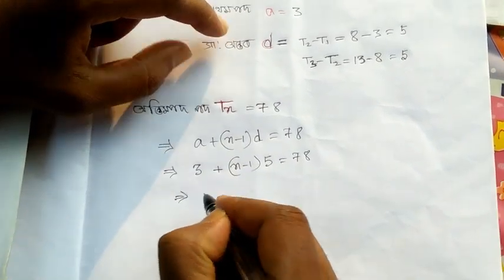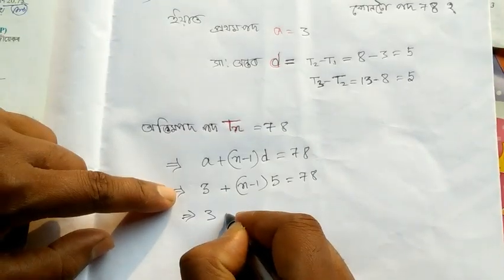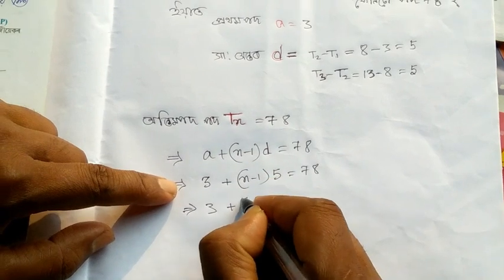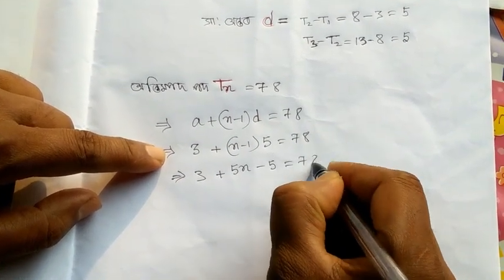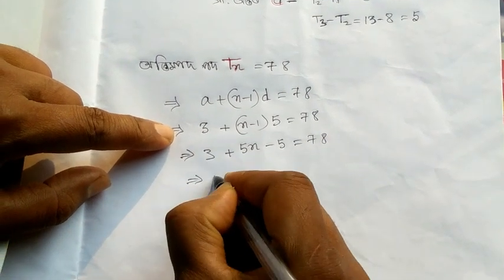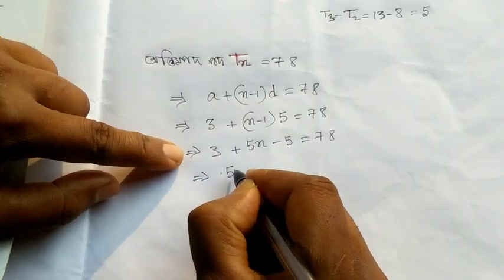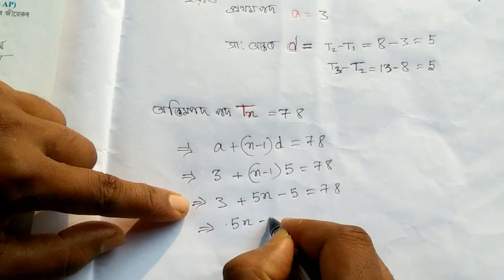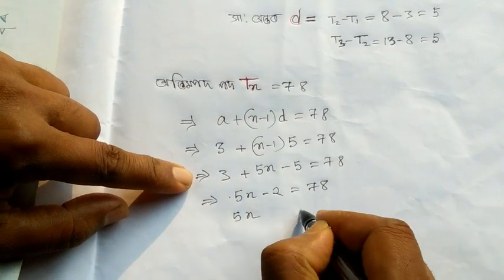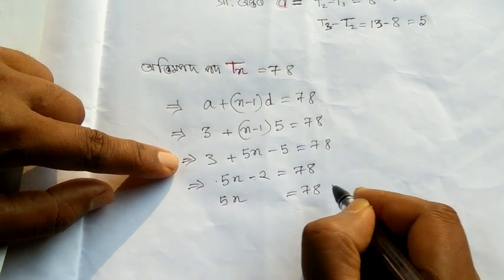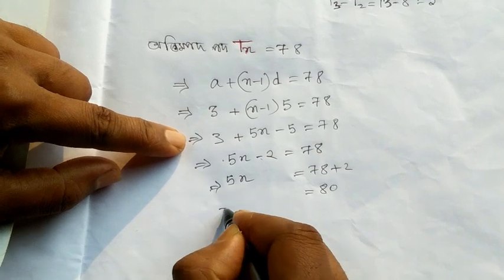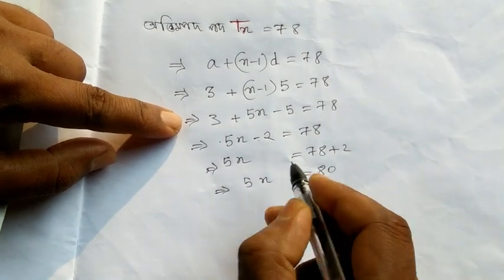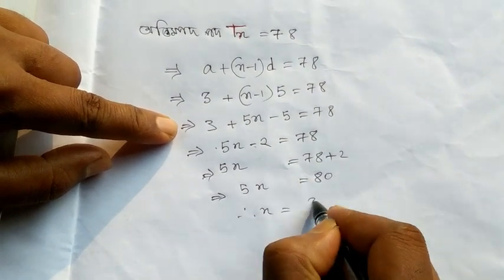3 plus 5 into n minus 1 equals 78. That gives 5n minus 78, then 5n equals 80, so n equals 80 divided by 5, which is 16.